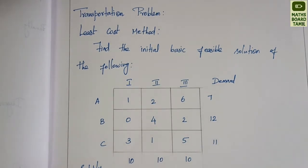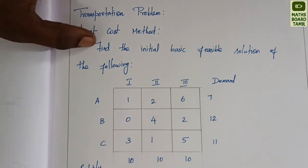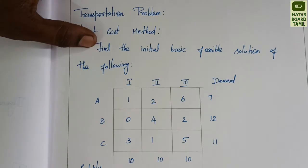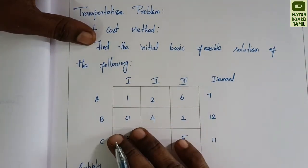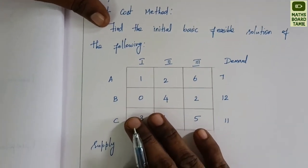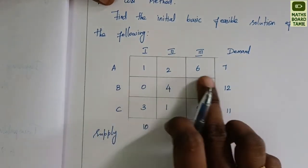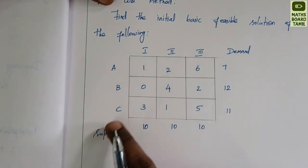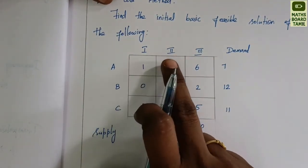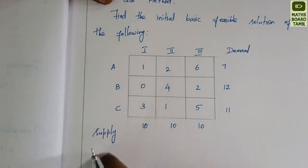Let's talk about the first question. Find the initial basic feasible solution of the following. There are three rows and three columns with supply and demand: 1, 2, 3 and A, B, C.